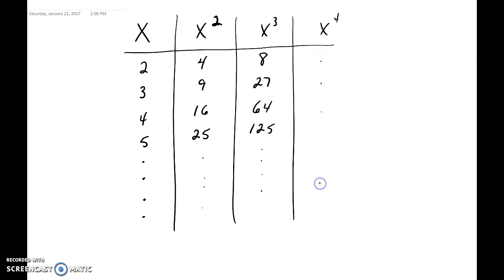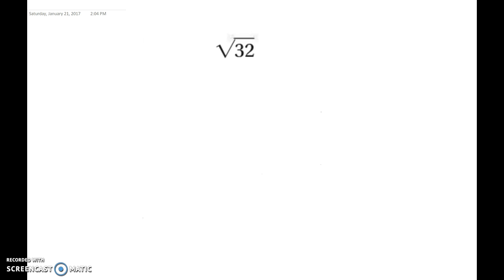We're not going to do x to the fourth, but you would keep doing the same thing on your chart. The reason I like for you guys to do this chart is that a lot of people have trouble simplifying radicals, and this gives you every number you possibly need to look for. Let's do an example.